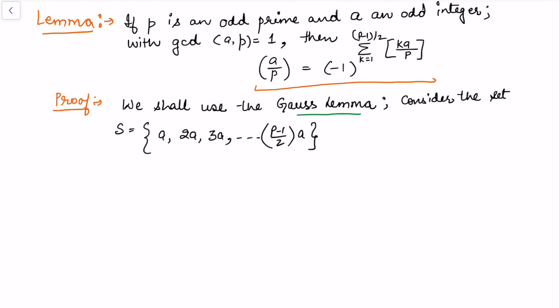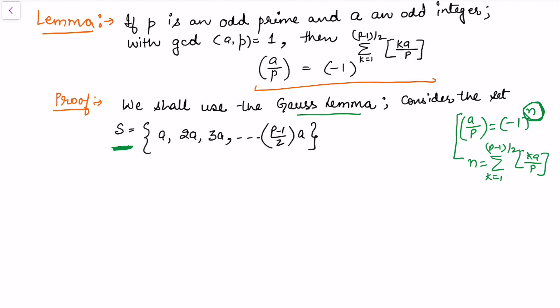We consider the set S used in the construction of the proof of Gauss's lemma. From that lemma, we have seen that (a/p) = (-1)^n, where n is the number of integers in S whose remainder upon division by p exceeds p/2. I need to show that n equals the summation of floor(ka/p) for k from 1 to (p-1)/2.